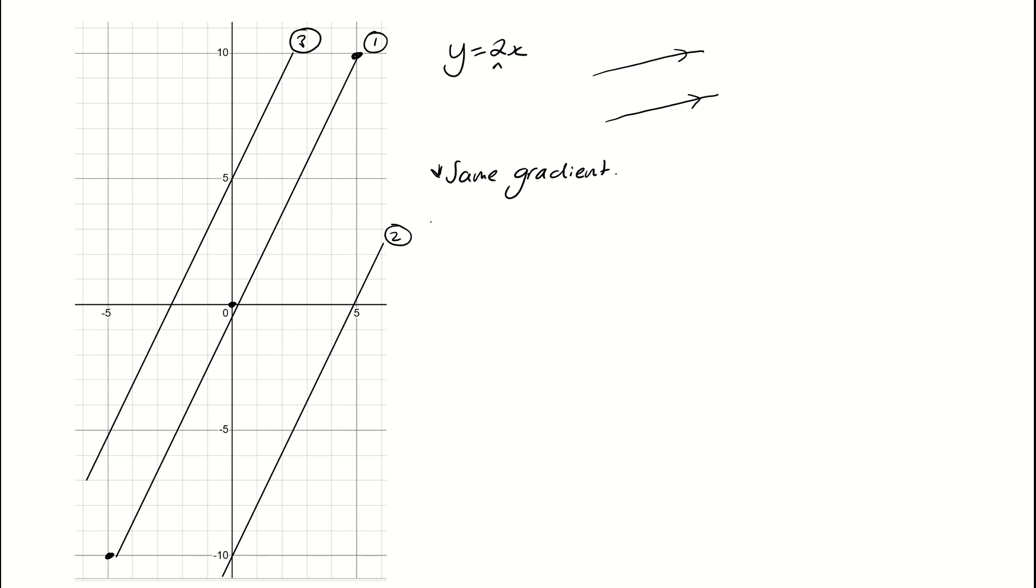And in this case, the gradient is 2, because it's y equals 2x. So this equation here would be y equals 2x plus 5 because we've now got a y-intercept of 5. And this one here would be y equals 2x minus 10 because we've got a y-intercept of minus 10 now. But all of the gradients are the same.